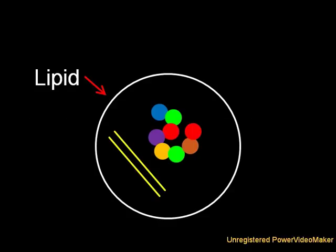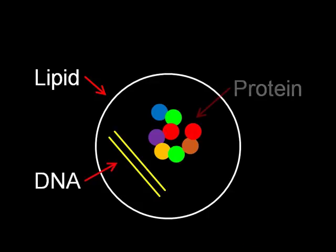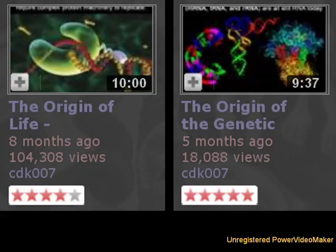Last, we left our intrepid organism. It was a self-replicating lipid-bound cell with a DNA genome and protein enzymes. To see how we got to this step from a soup of organic molecules, please watch the first two videos in the origin series: the origin of life abiogenesis and the origin of the genetic code.